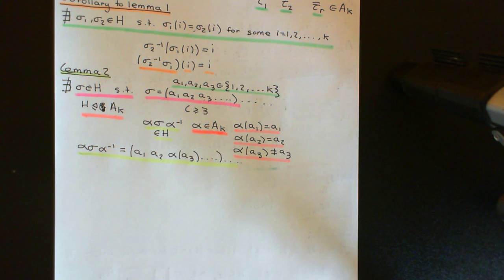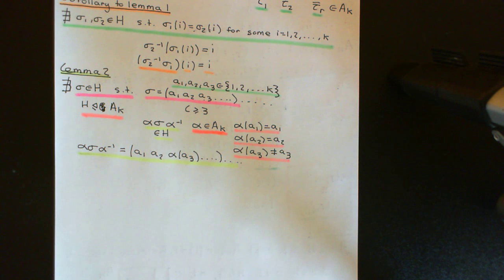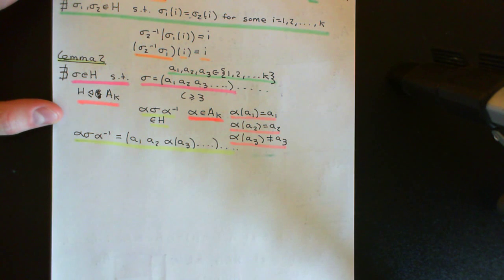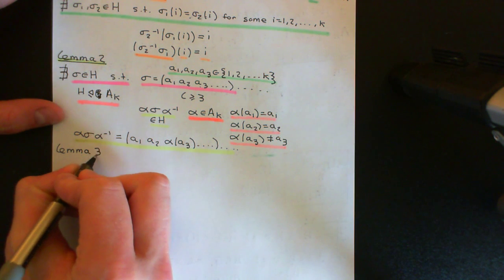What we can conclude now is that any element inside this normal subgroup H cannot have a cycle of length ≥ 3 in its cycle decomposition. Lemma 1 tells us we cannot have elements with 1-cycles (apart from the identity), and Lemma 2 tells us we cannot have cycles of length ≥ 3. That means all elements, apart from the identity, must just be made up of 2-cycles. And finally, Lemma 3 is going to show that elements consisting solely of 2-cycles cannot exist in H either.